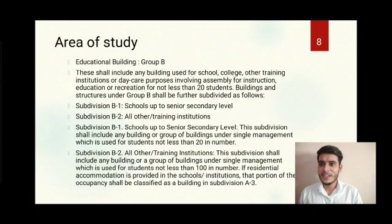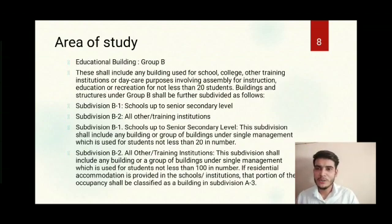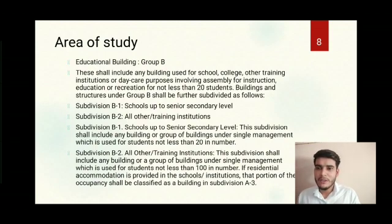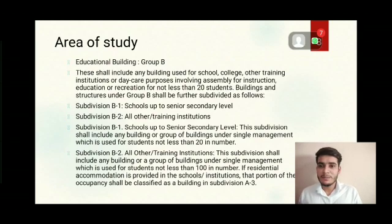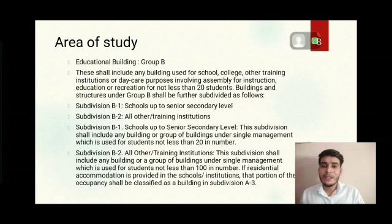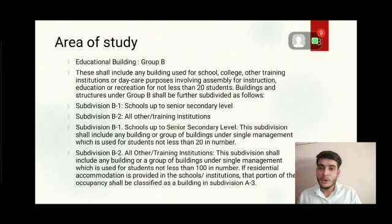Good morning friends. I am Akash Daima and I will continue with the area of study. Our area of study is educational buildings, which fall under Group B buildings. This includes any building used for schools, colleges, or training institutions or day care purposes involving assembly for instruction, education, or recreation for not less than 20 students. Group B is subdivided as: B1 — schools up to senior secondary level, for buildings with not less than 20 students; and B2 — all other training institutions including coaching classes, schools, and other institutions, for buildings with not less than 100 students.